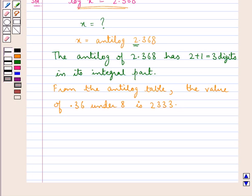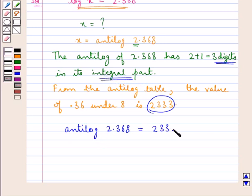For the antilog of 2.368, we place the decimal point after 3 digits in this number. Since there are 3 digits in the integral part, we get antilog of 2.368 equals 233.3.